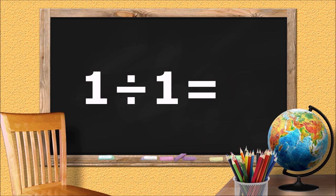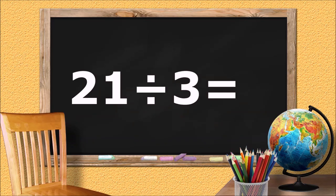1 divided by 1 equals... 1. 21 divided by 3 equals... 7.